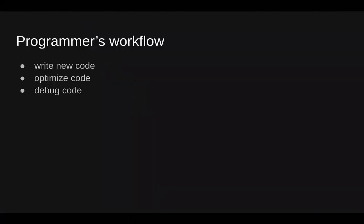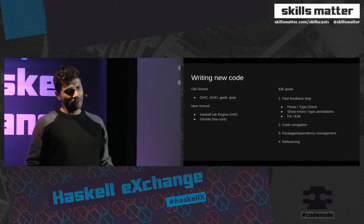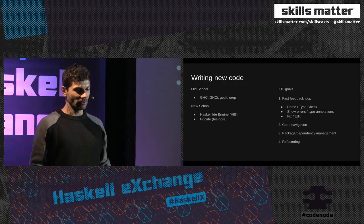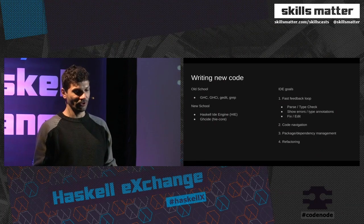Tooling is about making the programmer's life easier, especially the programmer's workflow. The workflow normally consists of three phases: writing, when the programmer writes new code; optimization, when it's ready and needs to be made more performant; and debugging, after the program is deployed and an issue needs to be fixed. In the past, when we wrote Pascal programs, we usually used regular editors or GHCI.